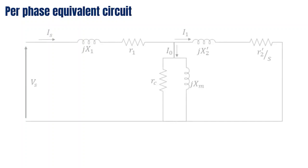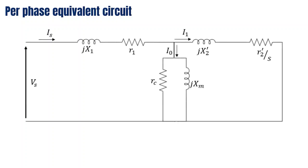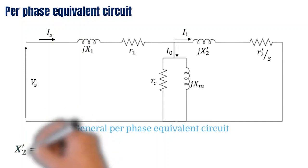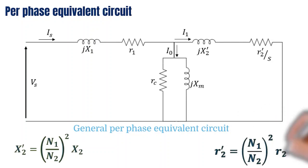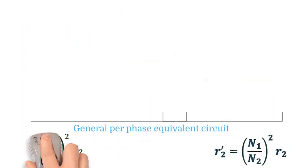We then redraw the per-phase equivalent circuit referring the rotor side to the stator. This is the general per-phase equivalent circuit for the three-phase induction motor. X2' is the rotor standstill leakage reactance referred to the stator, obtained using its expression. R2' is the rotor resistance referred to the stator, also obtained using its expression. We then perform several tests to find the values of these parameters.